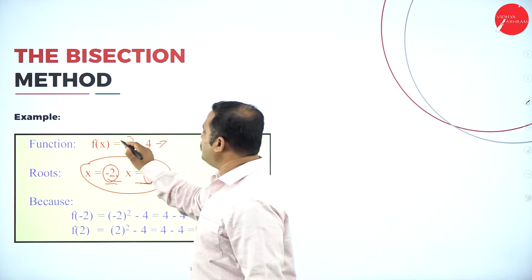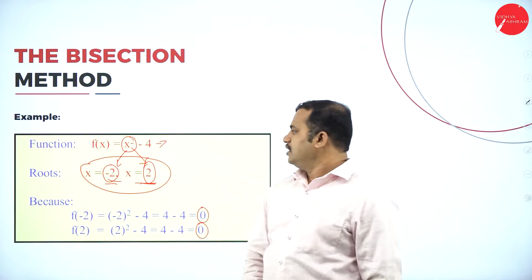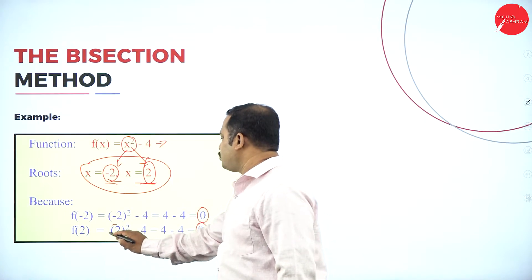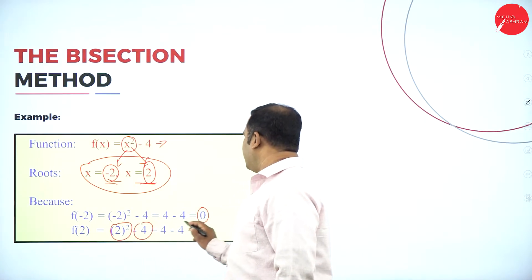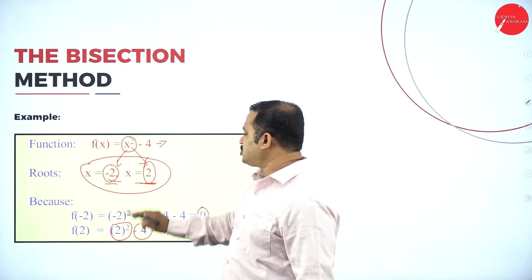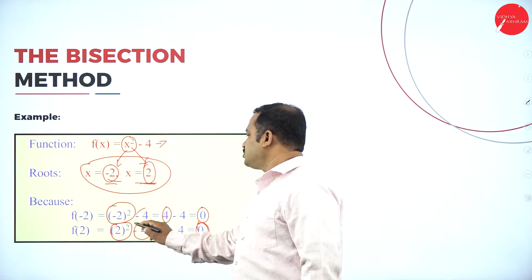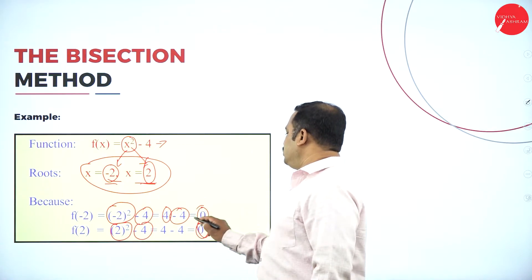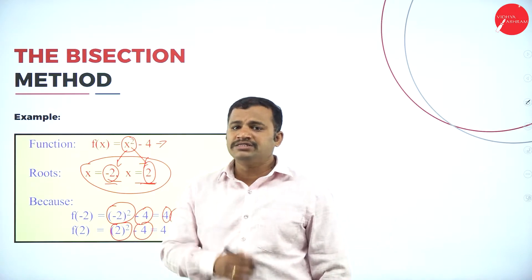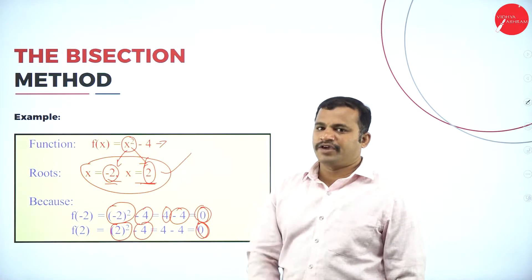Since I have x², one value must be +2 and another must be −2. If I substitute x = 2: 2² = 4, and 4 − 4 = 0. Similarly, if I substitute x = −2: (−2)² = 4, then 4 − 4 = 0. Again I have two values of zero, meaning the roots of the equation are −2 and +2. This is by the simplification method.